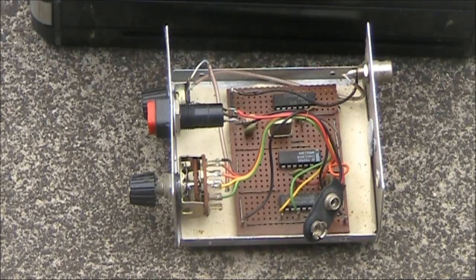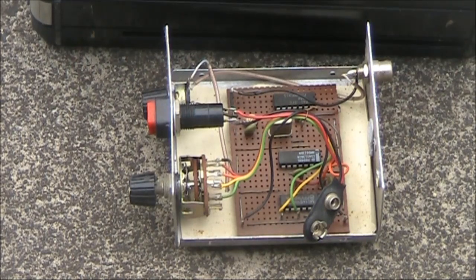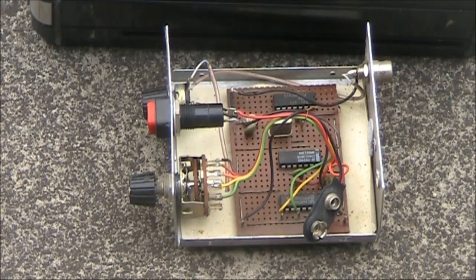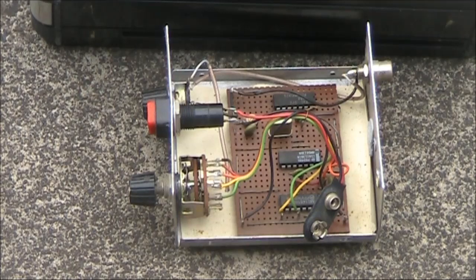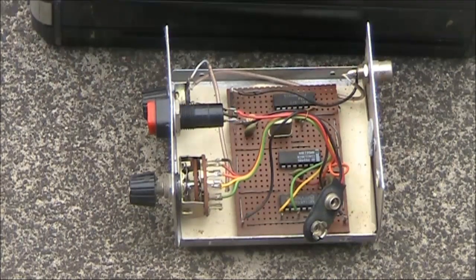So that's our look at frequency calibrators. They were an indispensable item around the shack, and in some countries, your license conditions required you to know what frequency you're transmitting on. If you had a calibrator and a receiver, even if its dial was pretty rudimentary, then you'd be able to establish that frequency.